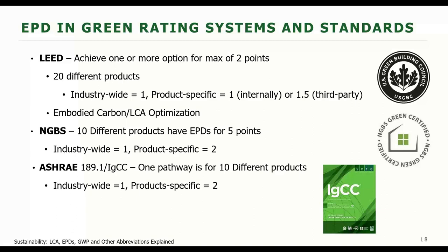LEED, NGBS, and the IGCC all have points or pathways that recognize EPDs. For LEED and NGBS, points are given if enough products have EPDs — they might say you need 20 different products to have EPDs. For all three standards, EPDs that are product-specific versus industry averages are given more weight by counting as if they were more than one EPD. So if it's industry-wide it might count for one, but if it's product-specific it might count for two towards that requirement of 20.